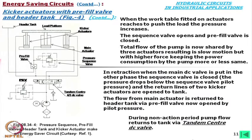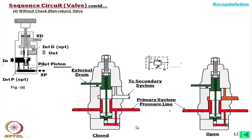This is the section showing how the valve looks — oil is coming in and going out through this valve. This is the pilot piston through which it can be opened externally. If this control signal is there, this will open and oil will flow. Otherwise, if there is a certain increase in pressure, this will open and oil will flow out. The primary system pressure line is here — when the pressure exceeds some amount, this opens to the secondary system.